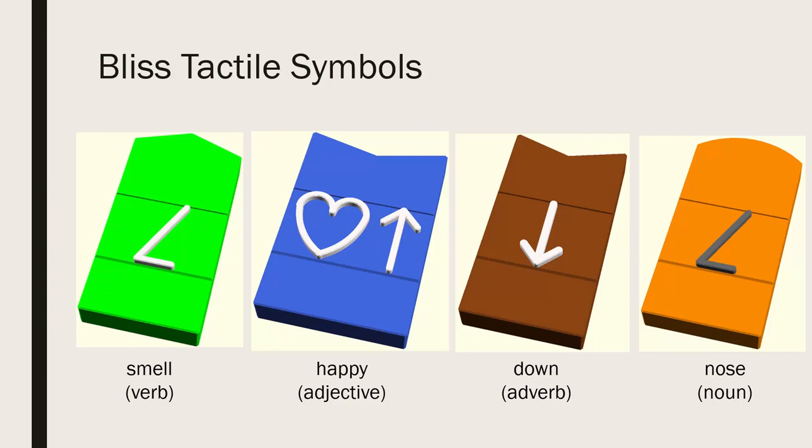In addition, you can use filament color to distinguish among the parts of speech. In this case, we've used colors from the Fitzgerald key.